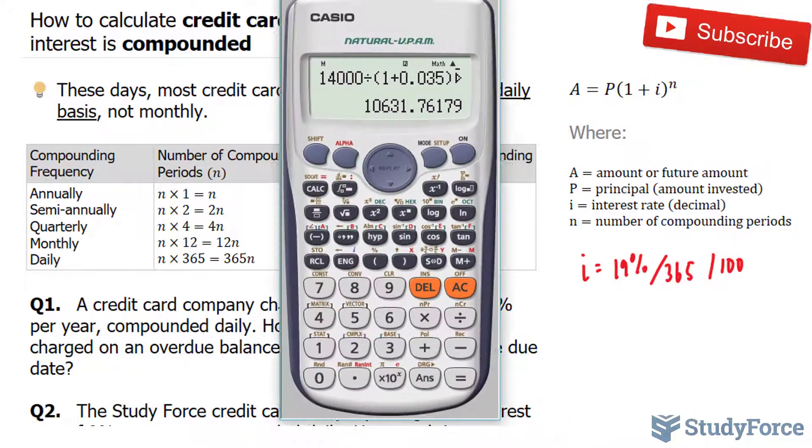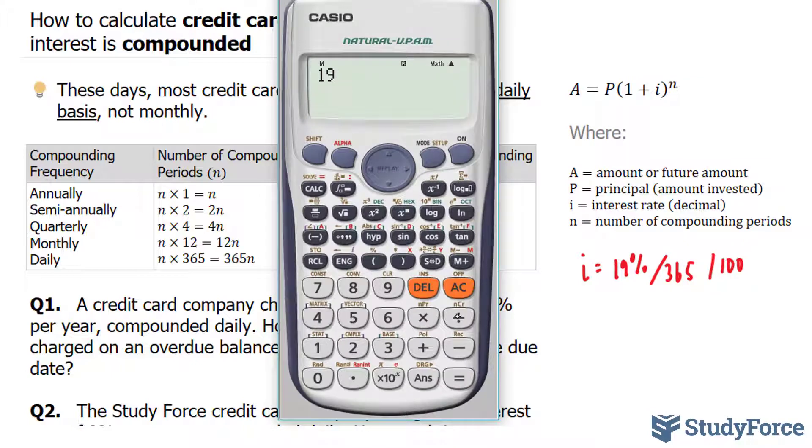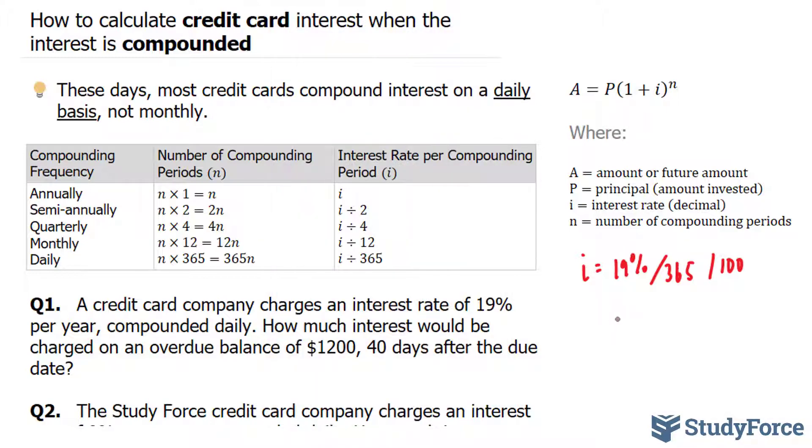So let's use our calculator, 19 divided by 365 divided by 100 and this gives us 5.20 times 10 to the power of negative 4. 0.000520. So this is approximately the interest per day.